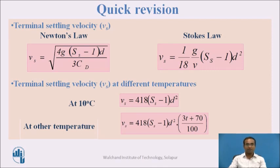We have also seen that for different temperatures, we have different settling velocity formulas. At the standard 10 degree Celsius temperature, we have Vs is equal to 418, small s minus 1, d square. For a temperature different than 10 degree Celsius, we have Vs is equal to 418, small s minus 1, d square, multiplied by 3t plus 70, divided by 100. Here, small t is the temperature.